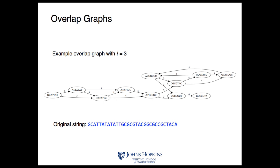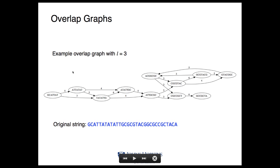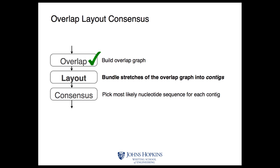At the end of this, we get an overlap graph where every read is a vertex and reads with significant overlaps are connected by edges. It's the assembler's task to find a path through this graph — visiting each node — that reconstructs the original genome sequence. Looking at the graph, it's a little complicated and we can't immediately tell what the genome sequence is. The assembler has to work harder and figure out the true path through the graph from all possible paths.